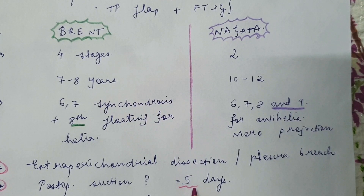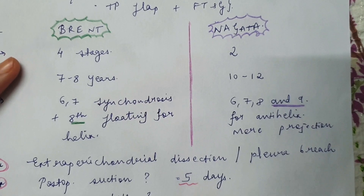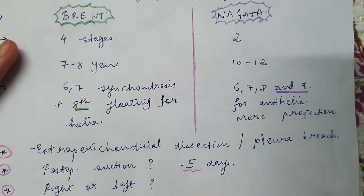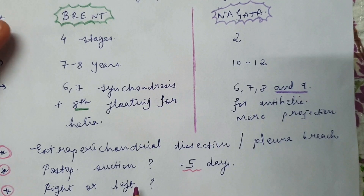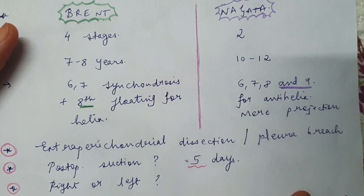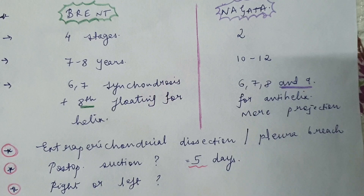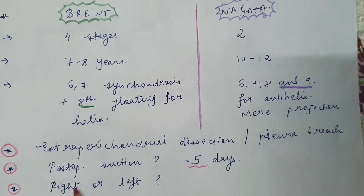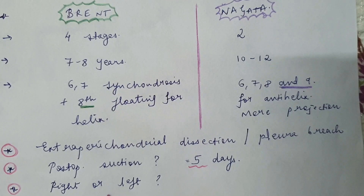As for which side to harvest cartilage from, most surgeons take it only from the right side because the left side is close to the pericardium. Generally the contralateral side is preferred. If you are reconstructing the left ear using right-side cartilage, you can simply flip it over and achieve the proper orientation.